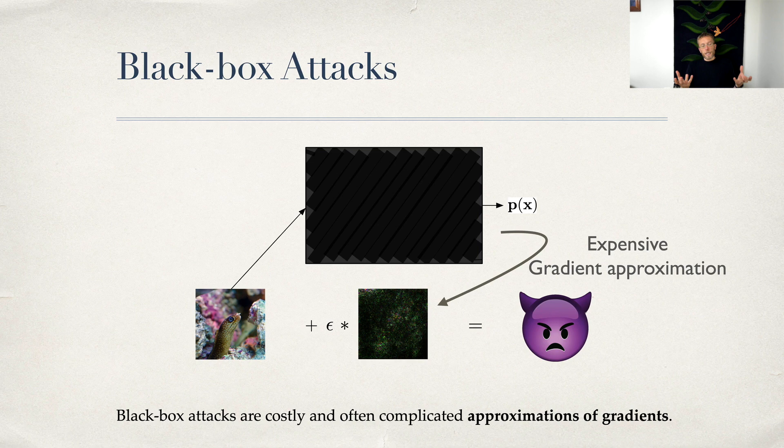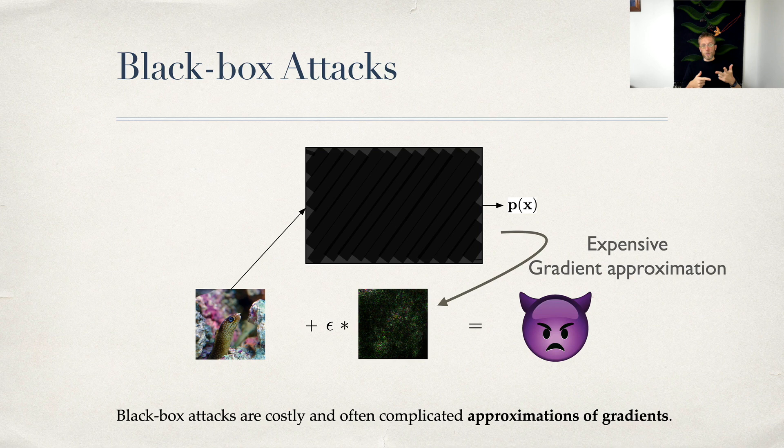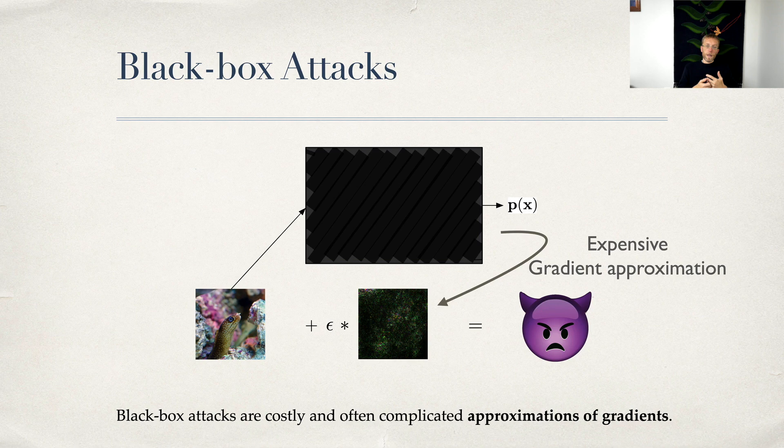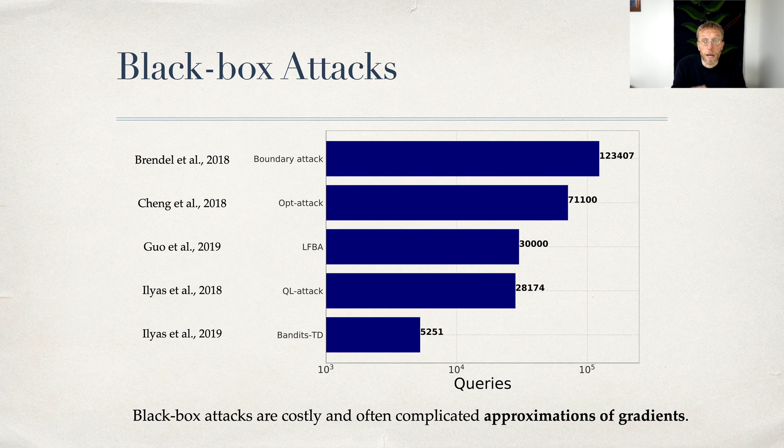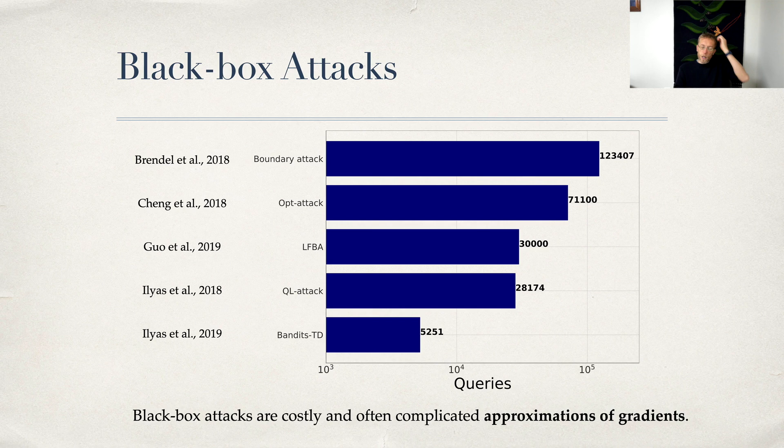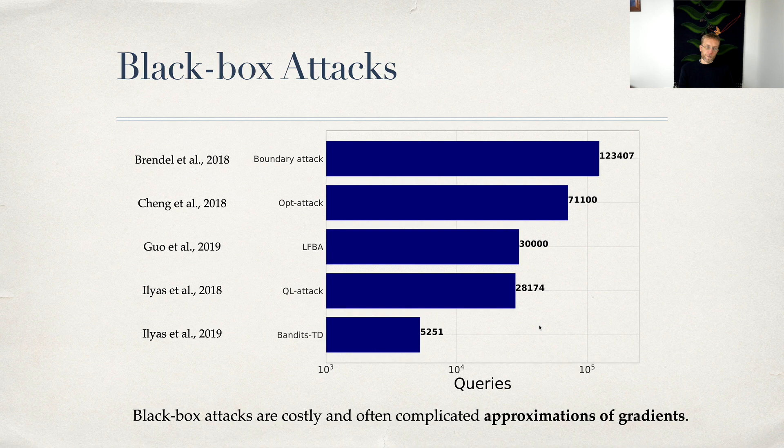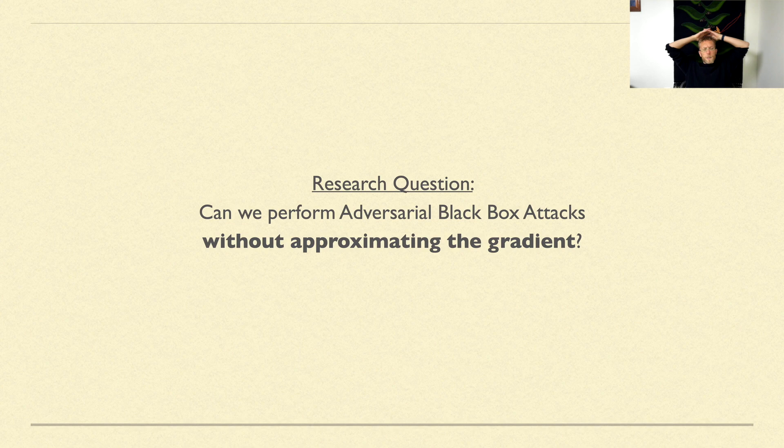Black box attack means I'm trying to attack an algorithm that I don't know how it works, other than I can run images through it. Many papers have attacked this problem, and they probe many different directions to approximate the gradient. The downside is you need many queries, in the order of thousands, for this to be successful. So we asked ourselves, is there a way to do black box adversarial attacks without approximating the gradients?